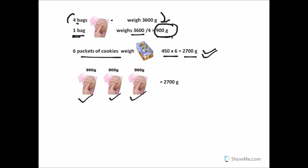So 900 is repeated 1, 2, and 3. That is 900 into 3 gives 2700 grams. So 3 bags are needed to hold 2700 grams of cookies.